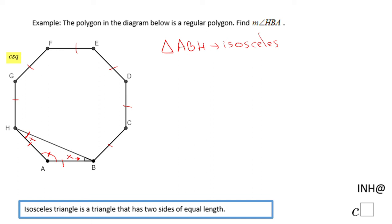How do we find the measure of angle A? Don't forget that we have a regular polygon and we just need to count how many sides we have: one, two, three, four, five, six, seven, eight. This is an octagon, eight sides.